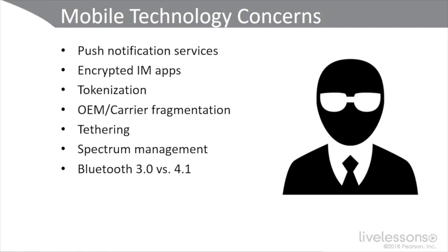Bluetooth 4.2 is featured in the iPhone 6, and Bluetooth 5 is really what you should be aware of. Here at Brio, we're concerned with Bluetooth 5.0, which is the fastest iteration — two times the speed, four times the range, improved interoperability and coexistence with other wireless technologies, continuing to advance the IoT experience. So we're mentioning 3.0 versus 4.1 for the sake of the exam, but in a real-world environment, we need to be aware of Bluetooth 5.0 and its support for IoT.